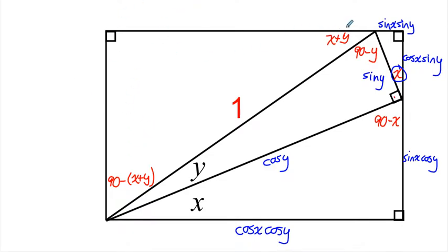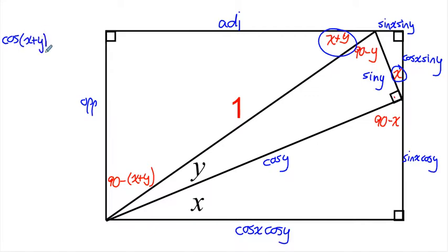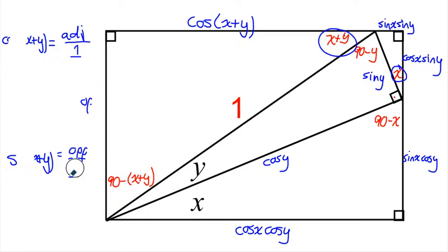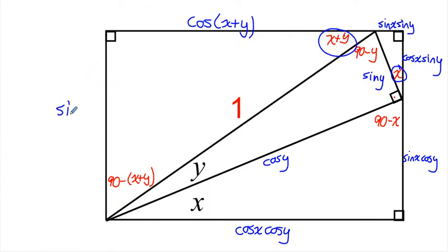Let's do our last triangle — this big one up here. Our reference angle is x plus y. So this is adjacent and this is opposite. If I want cos of x plus y, that must equal the adjacent over 1, so this adjacent side is equal to cos of x plus y. And for the opposite side, sin of x plus y equals opposite over hypotenuse, so opposite over 1, which is just the opposite. So this opposite side is equal to sin of x plus y. This whole side here is sin of x plus y.